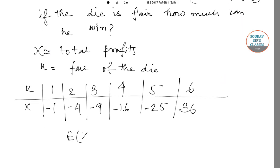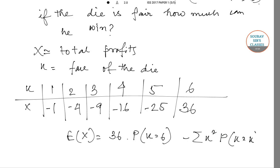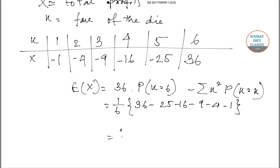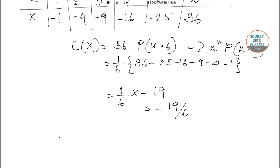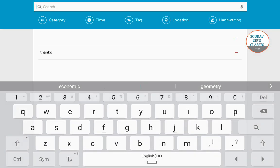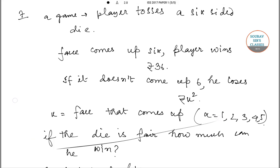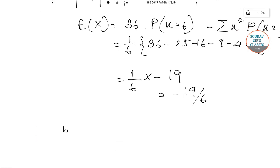Expectation of X equals 36 times P(k=6) minus summation of k squared times P(k=k). This equals one by six multiplied by 36 minus 25 minus 16 minus 9 minus 4 minus 1. This gives us one by six multiplied by minus 19, which is minus 19 by 6. So minus 19 by 6 is our answer, which is option B.